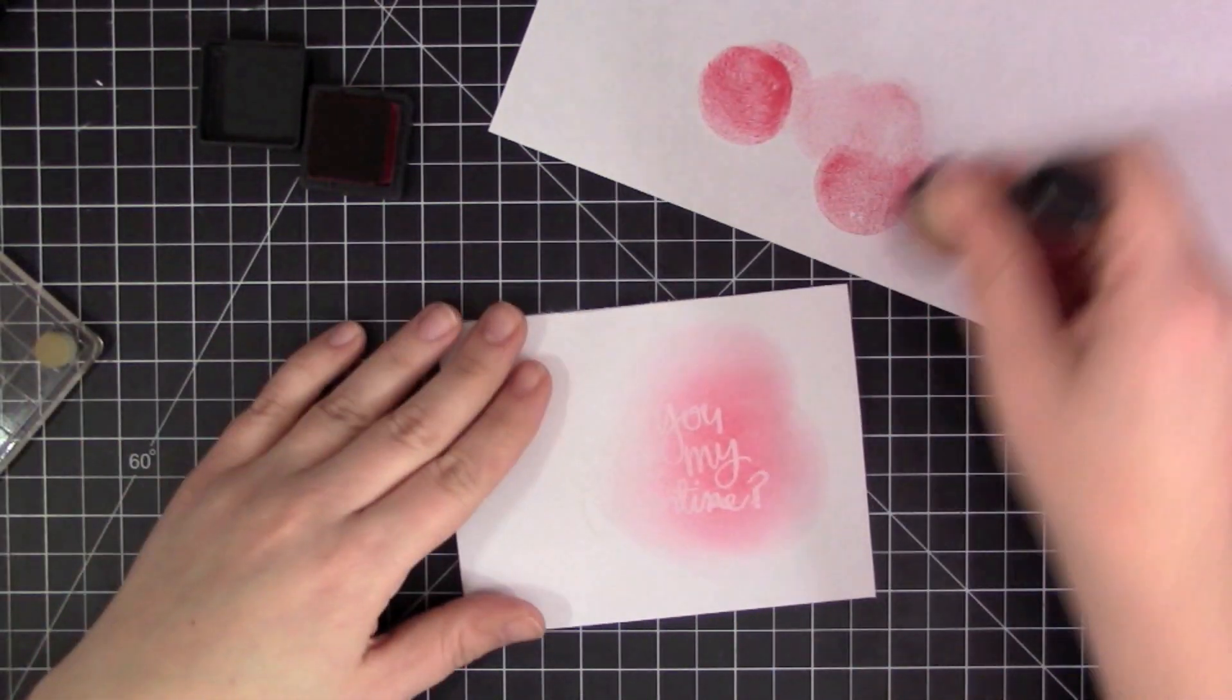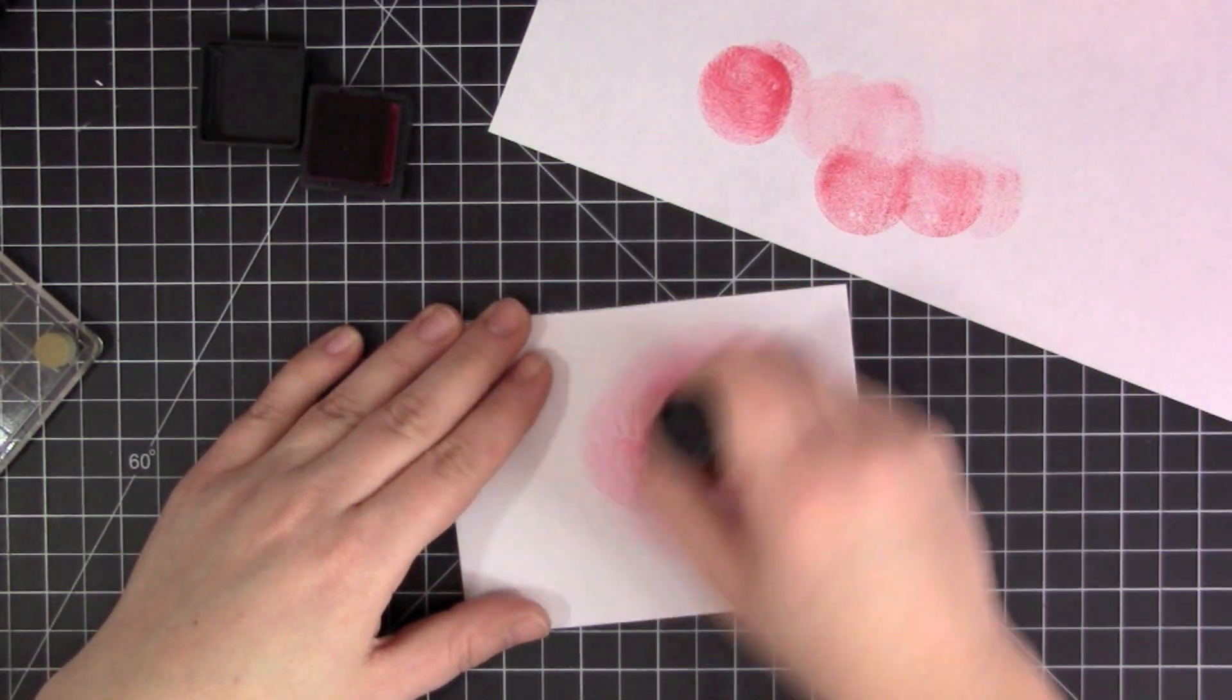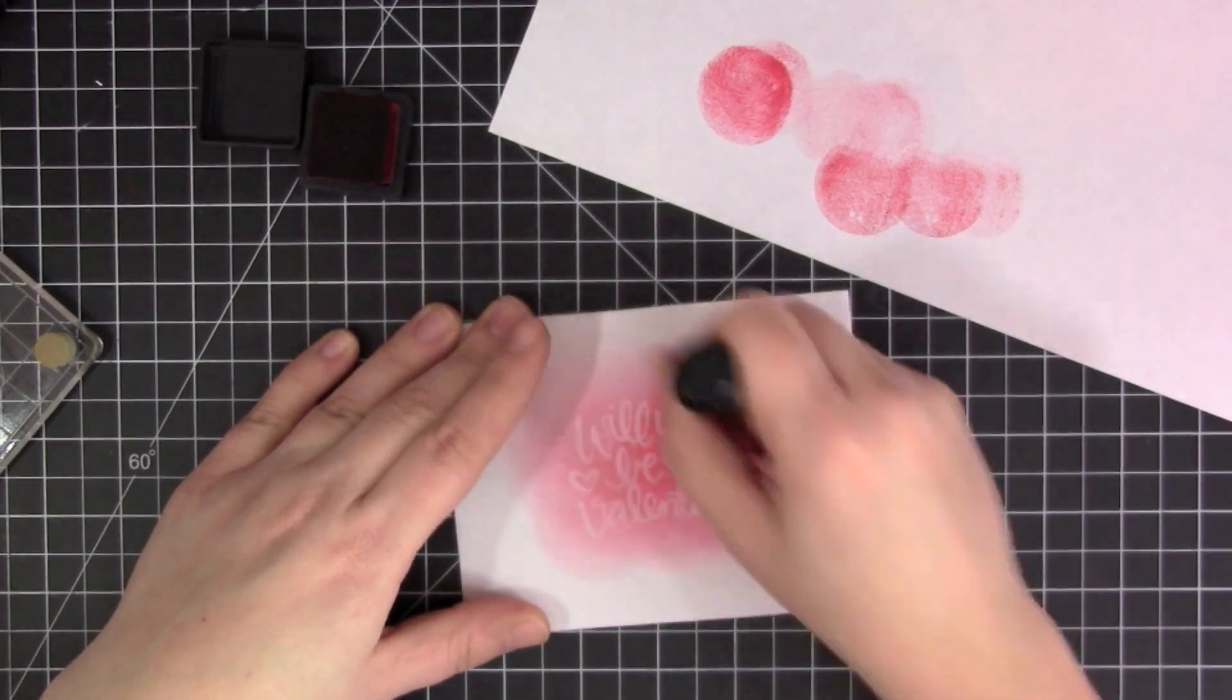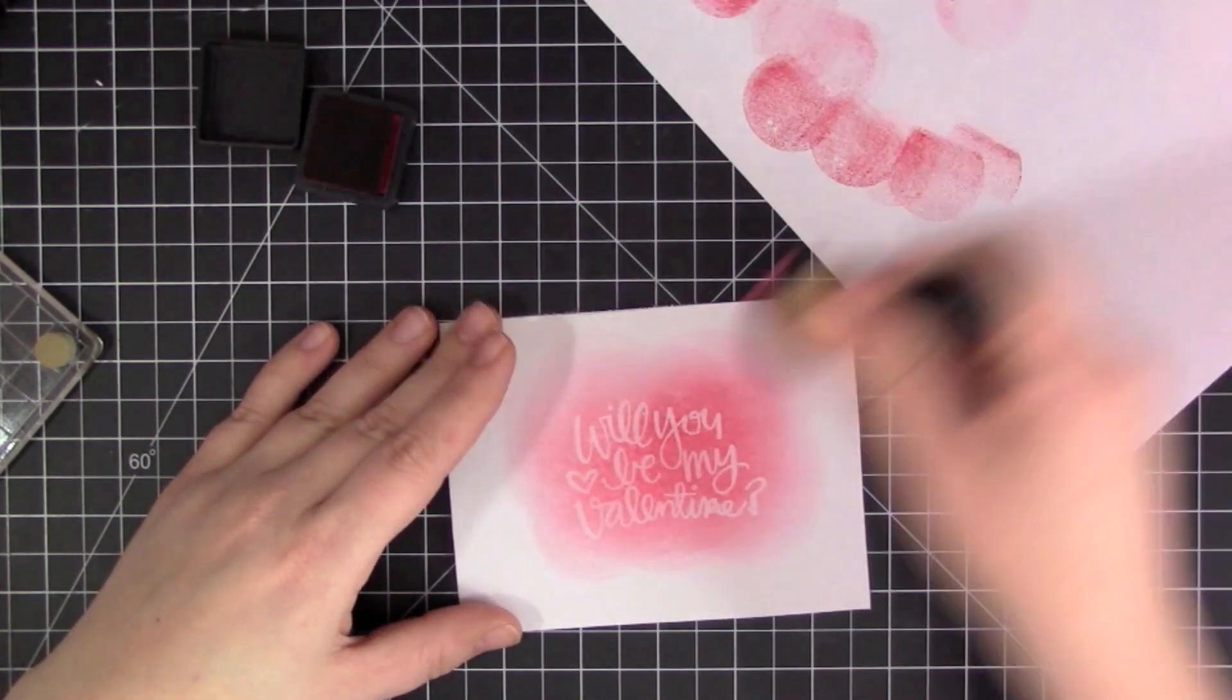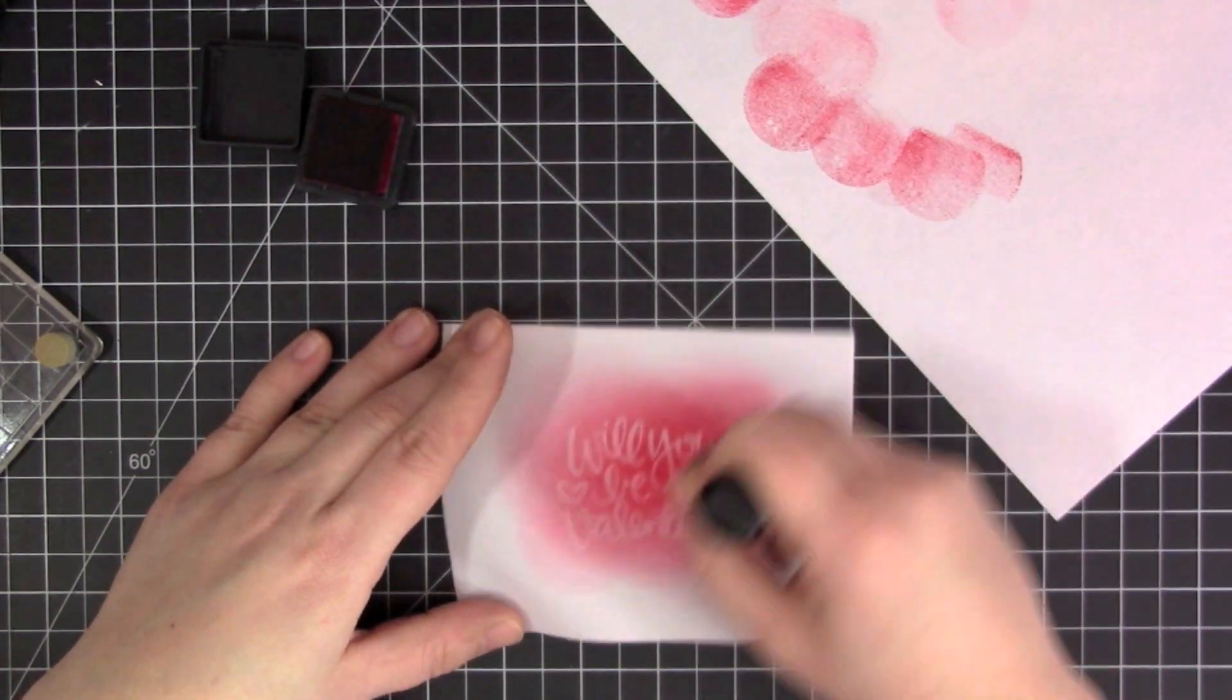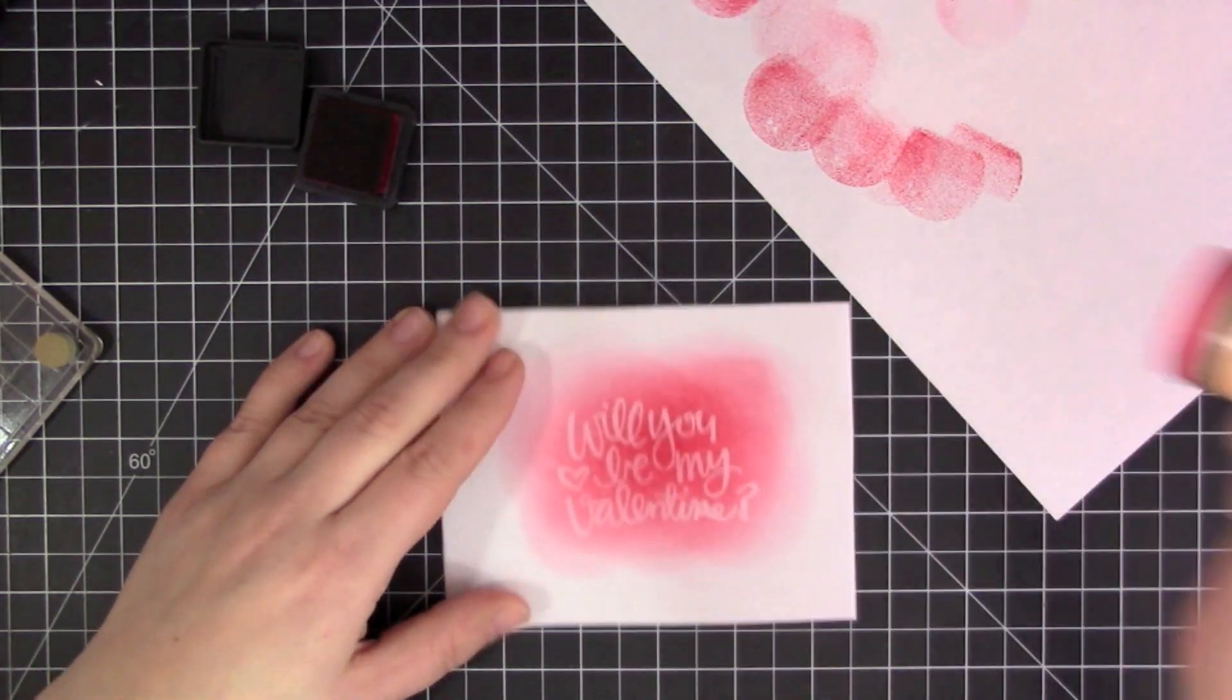Normally when I apply ink, I start off on the edge and work my way onto the surface. But for this particular technique, I want the center area of the canvas to be where the ink is heavily concentrated and I want it to fade out as it comes to the edges.